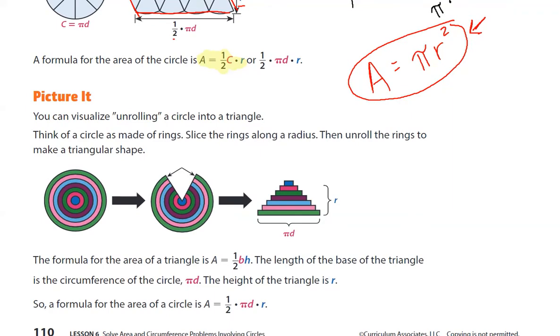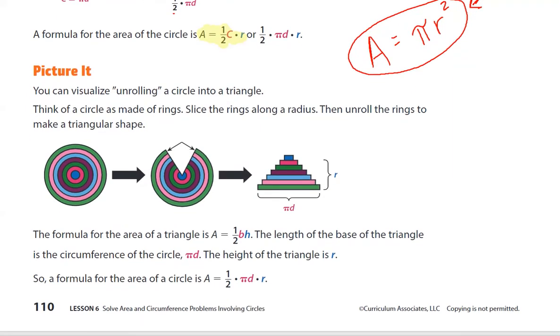Okay here's a nice little visualization. You can visualize unrolling a circle into a triangle. Think of the circle as made of rings. Slice the rings along the radius. Like a pizza. Slice, slice, slice, slice.